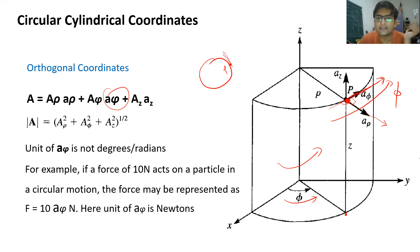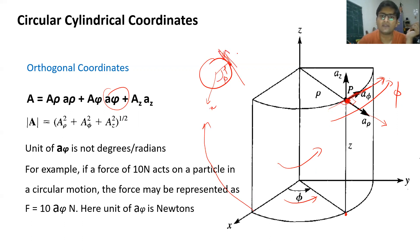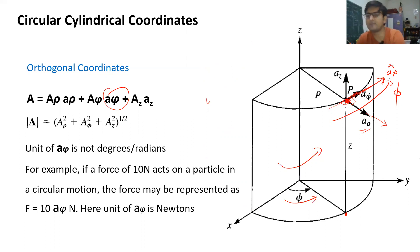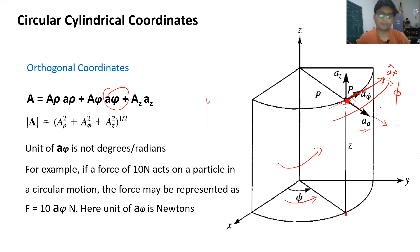Since a_rho is perpendicular to the tangent at point P, the unit vector a_phi — which is along the tangent — is perpendicular to a_rho. And z is obviously in the upward direction, which is perpendicular to both a_phi and a_rho. So we have proved that all three unit vectors a_z, a_rho, and a_phi are perpendicular to each other, which is why we call this an orthogonal coordinate system.